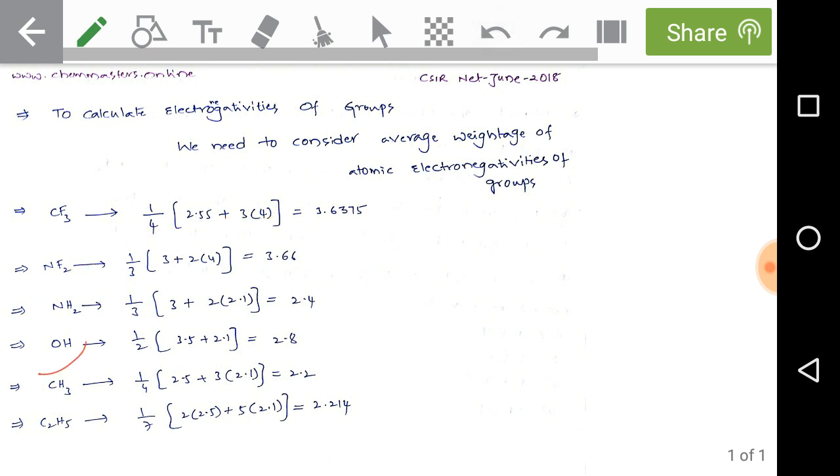If we consider OH, oxygen has 3.5 electronegativity. The group has only two atoms, so 1/2(3.5 + 2.1) = 2.8. Observing NH2 and OH electronegativity values, OH has more electronegativity value than NH2. That's why option B is the correct sentence.